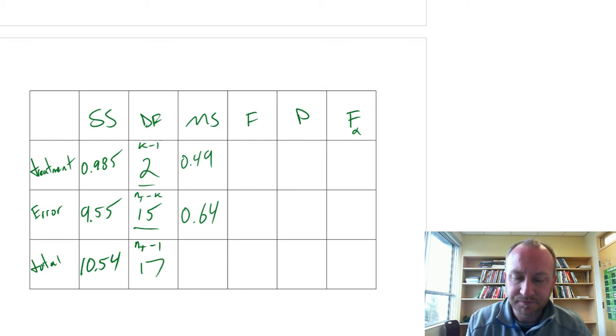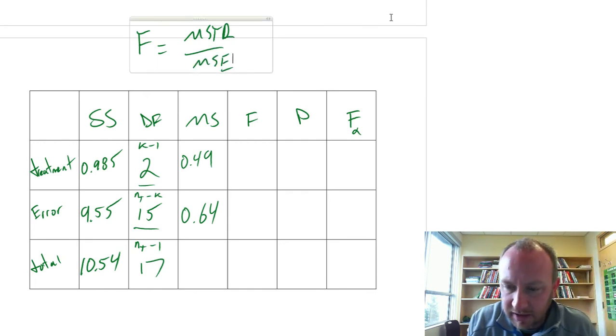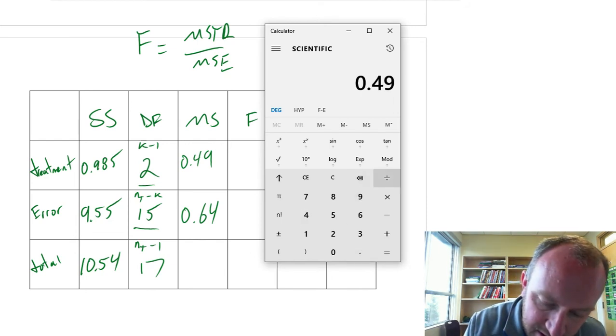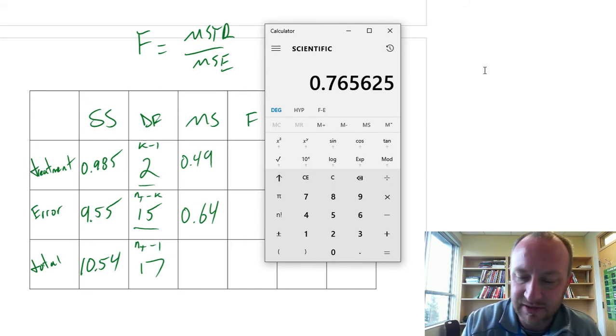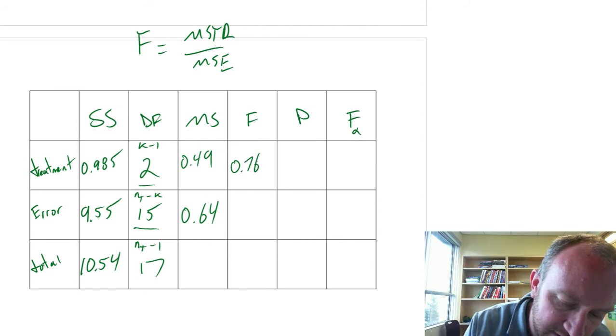Now we want our F statistic, MSTR divided by MSE, so let's get that calculator out, 0.49 divided by 0.64, 0.766.